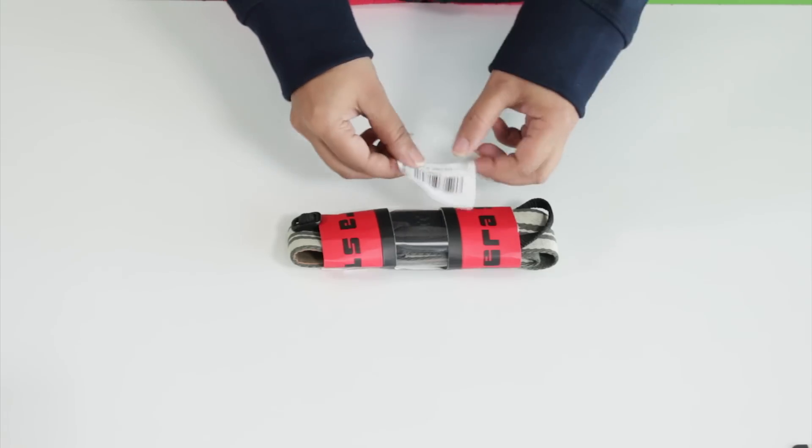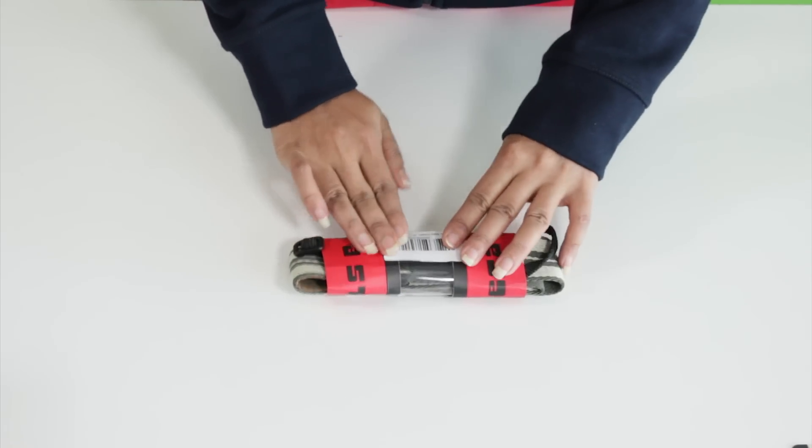Label the unit with an FNSQ barcode. Ensure that the label covers the original product's barcode completely.